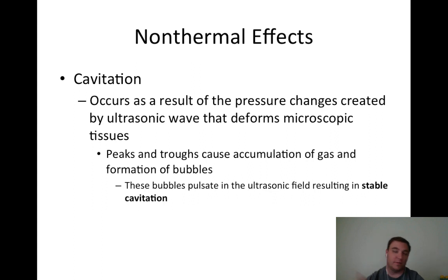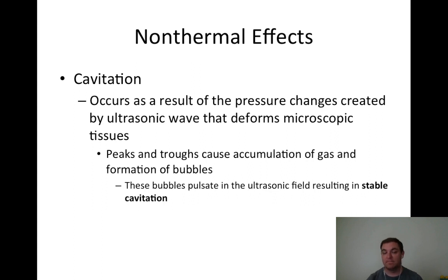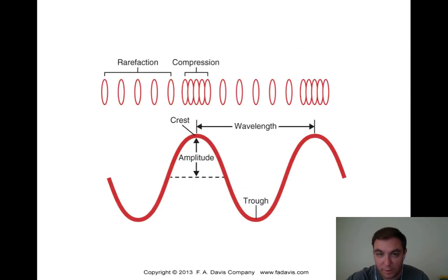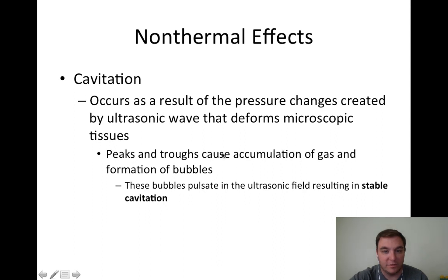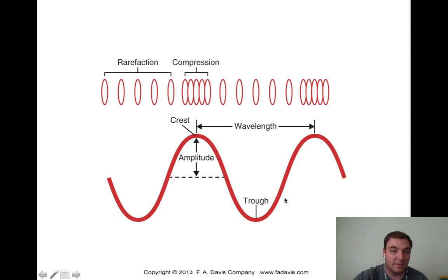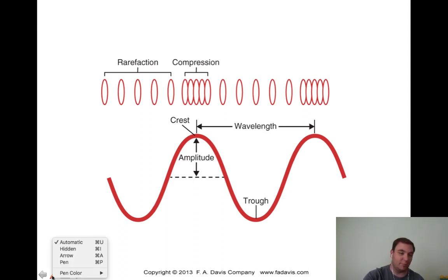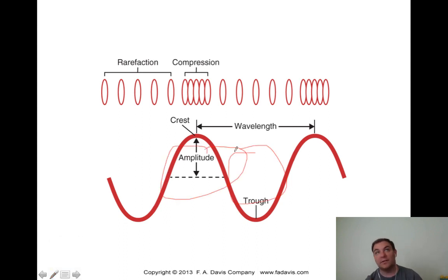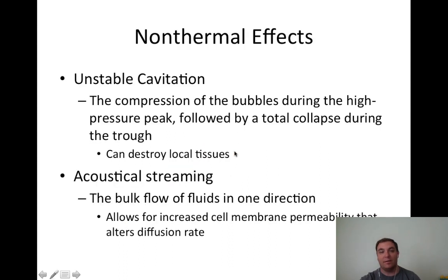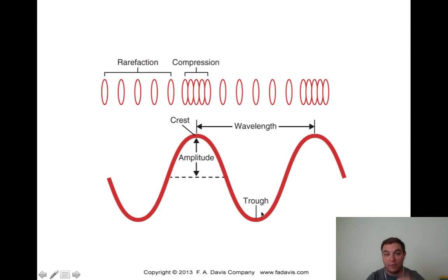Cavitation occurs as a result of pressure changes from the ultrasonic wave deforming microscopic tissues. These peaks and troughs cause accumulation of gas and formation of bubbles that pulsate in the ultrasonic field - resulting in stable cavitation, which we like. In unstable cavitation, the intensity is too high, causing bubbles to oscillate and then burst. Unstable cavitation: compression of bubbles during high-pressure peak, followed by total collapse and explosion during the trough - during refraction when everything spreads out.